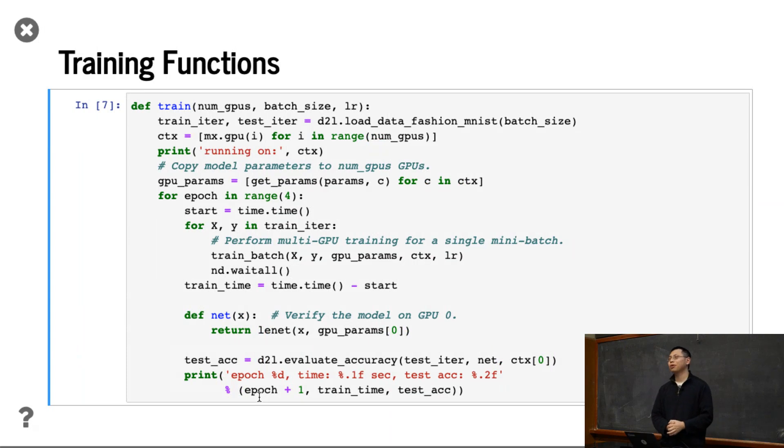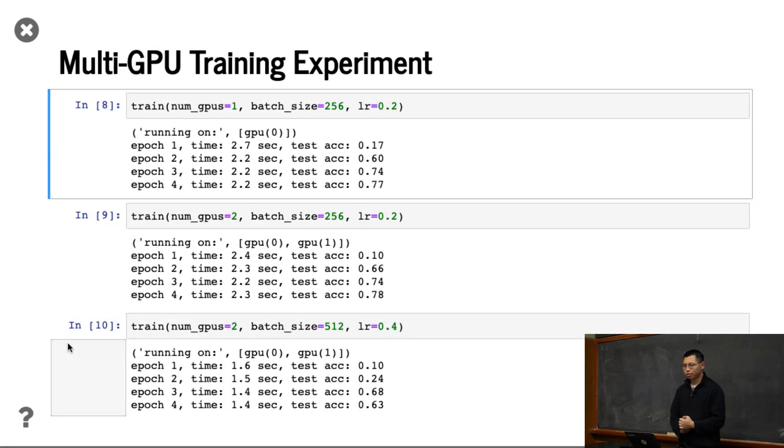So the training function is not so different to the others we have. Like here, we create a list of context, number of GPUs we have, and then we need to copy the parameters into different GPUs, and then we run for data epochs. And for each, every time we read the batch and we run the batch on multi-GPUs. Here, we're adding weight all here just for benchmark purpose. And then we print something there.